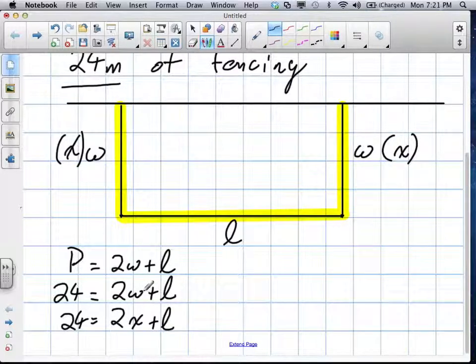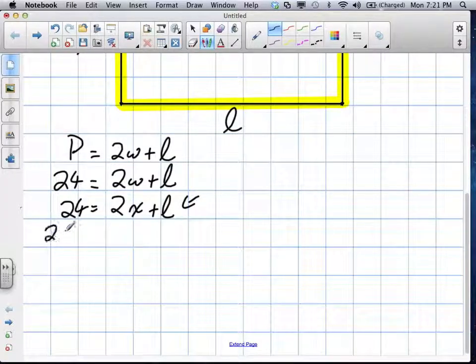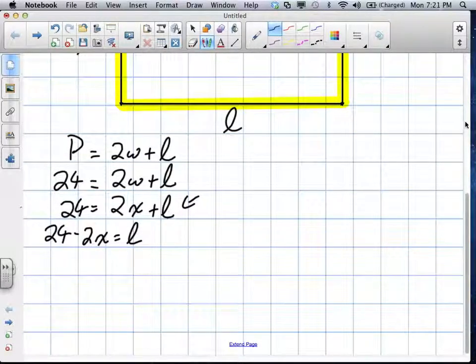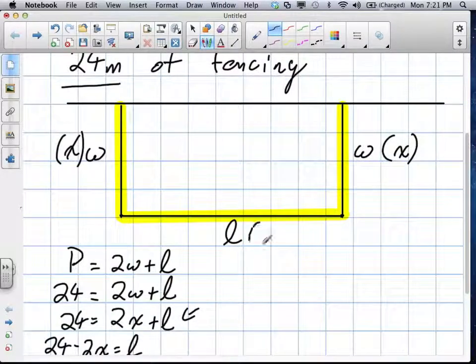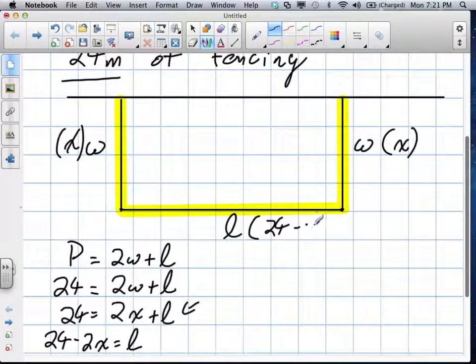So our question now becomes 24 is equal to... we replace w with the term x plus l. Now, we want to make reference to this because this is going to be a function, so we're going to find all the different areas involved in this. So what we're going to do is we're going to use this equation to solve for l. So once we have this information, we're going to set it equal to l. So this becomes 24 minus 2x is equal to l. So our new length, when width is x, is 24 minus 2x is our new length.